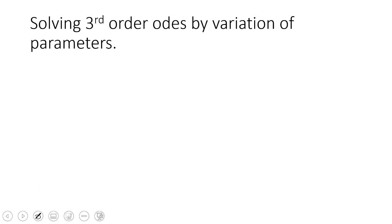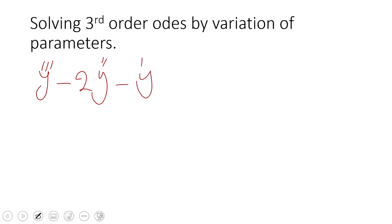Consider the differential equation: y triple prime minus 2y double prime minus y prime plus 2y is equal to e^(4t).